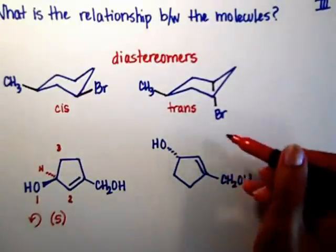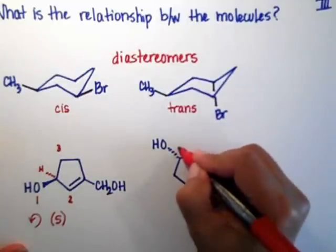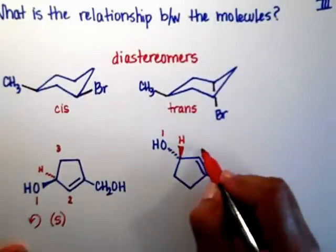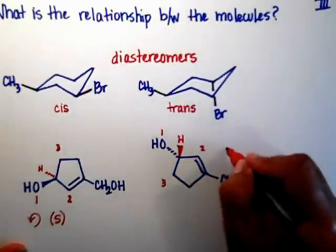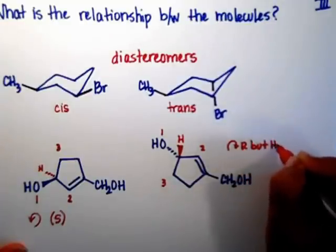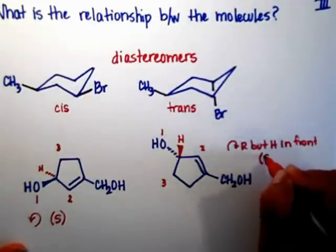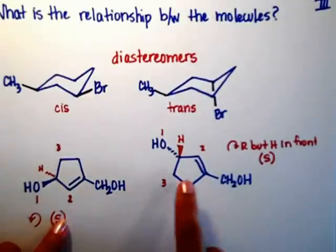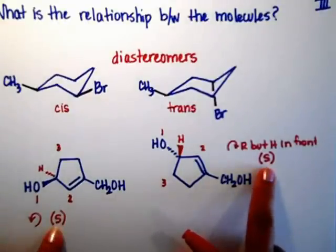The molecule that's on the right side — first of all, the OH is in the back. That means that the hydrogen is in the front. And if it's in the front, it's the opposite of what my pen is going to be doing. So my pen is going R, but the hydrogen is in the front, so it's the opposite of R. And what's the opposite of R? S. So the molecule on the left is connected exactly the same as the molecule on the right.